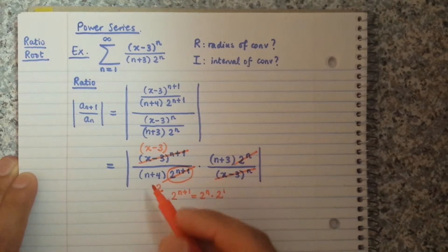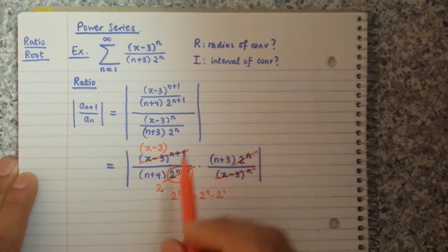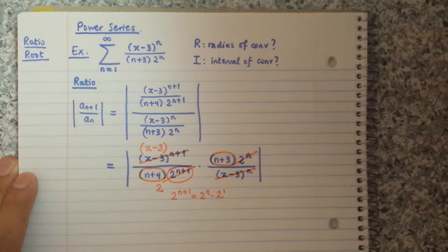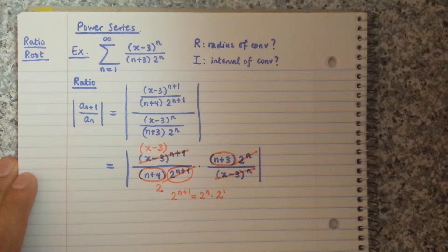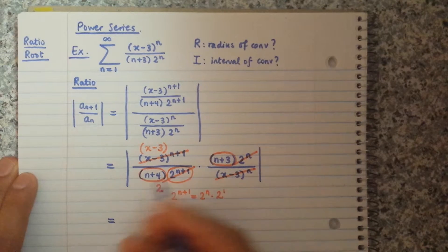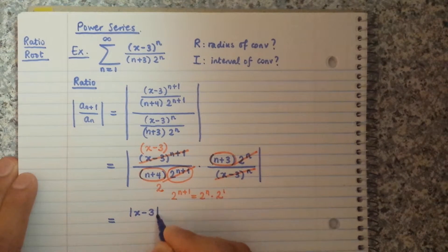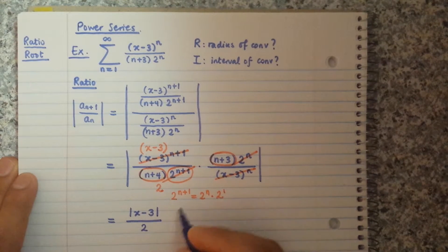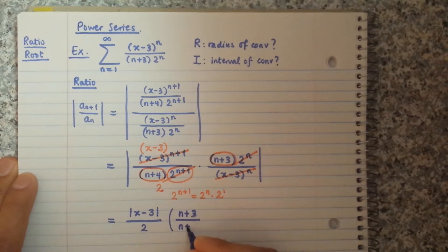For the polynomials — sometimes you see this type of mistake — n+3 and n+4 do not cancel because there's an addition between them. If you replace n by n+1 in a polynomial, the limit will not change; it will always be 1. So after simplification we have absolute value of (x minus 3) at the top, a 2 at the bottom, and (n+3) over (n+4).